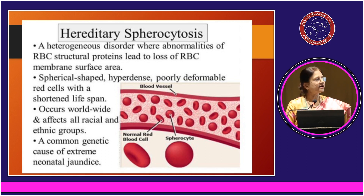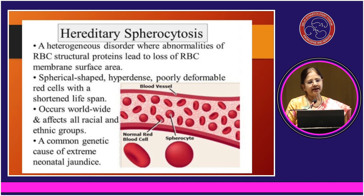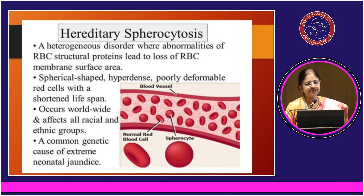Hereditary spherocytosis is a condition where there is an abnormality of the RBC structural proteins, which leads to loss of RBC membrane surface area and a shortened lifespan of the red cell. It is a common genetic cause of extreme neonatal jaundice.